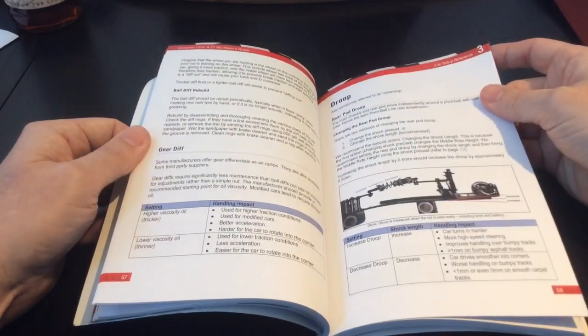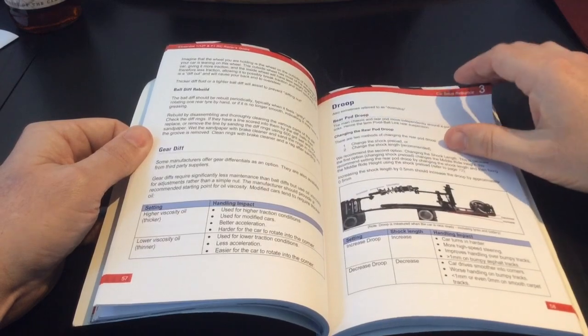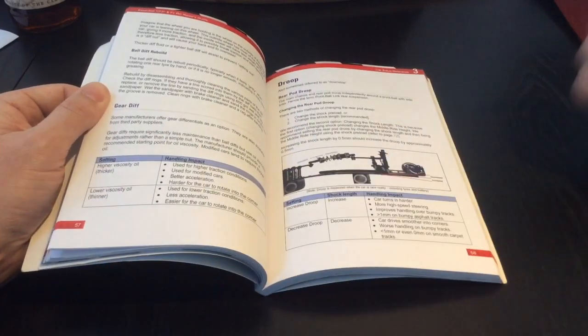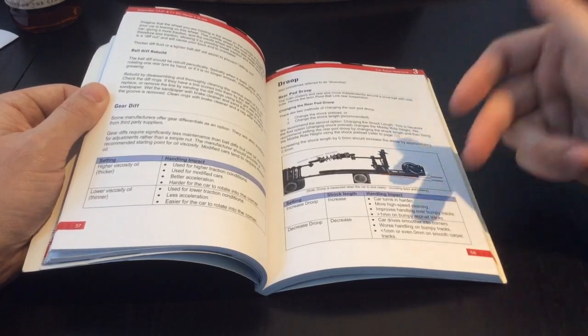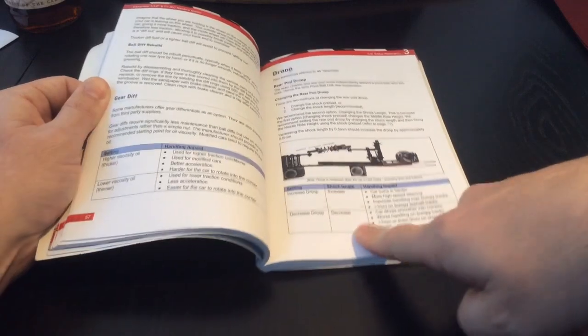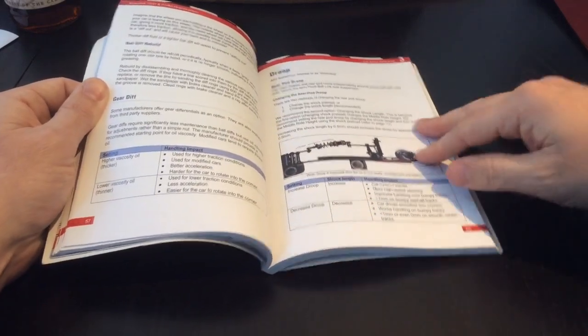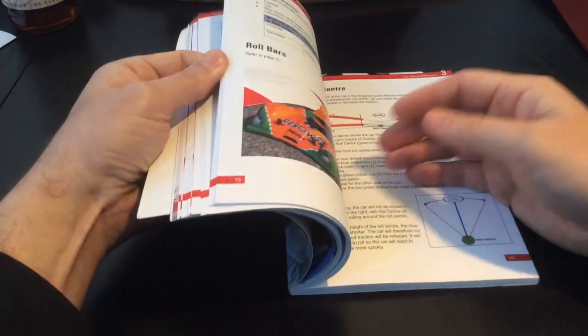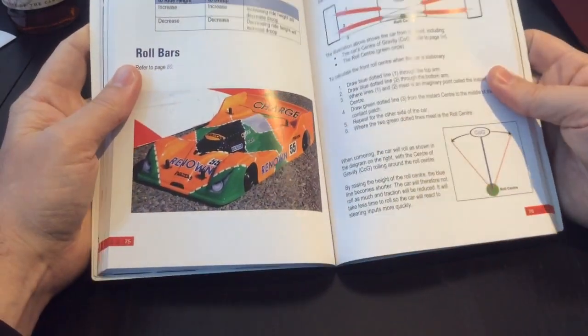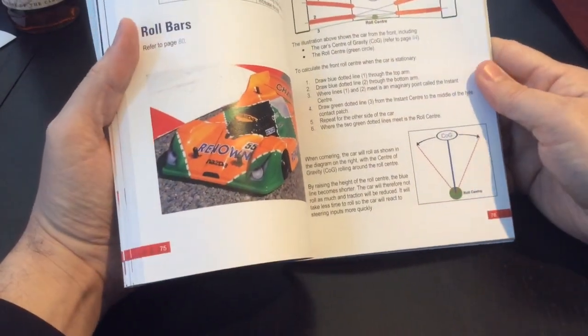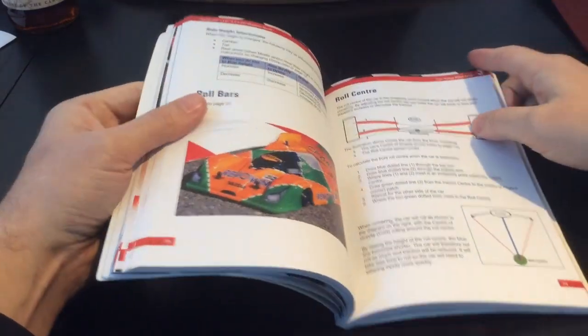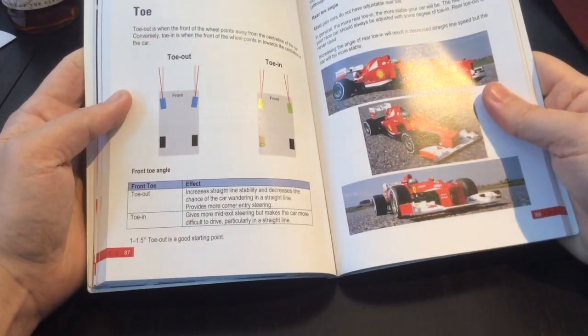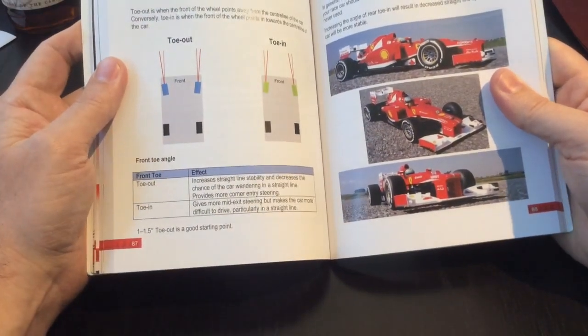Lots of detailed information talking about differentials, gear diff, droop. Let's just take a look here. Setting increased droop shock length: what do you have to do, increase it. What does it do, handling impact? It says car turns in harder, more high-speed steering. And then it shows the opposite, decrease droop. What do you have to do, decrease the shock length, and it gives you all this great information which will help you easily understand what to do when setting up your car. Roll bars, roll centers. Now roll centers, it's always been a tricky thing for people to understand, but Dave has done it in such a way that it's easy for you guys to digest and then be able to put it into action. Toe-in, for example, with the Tamiya TRF 103.